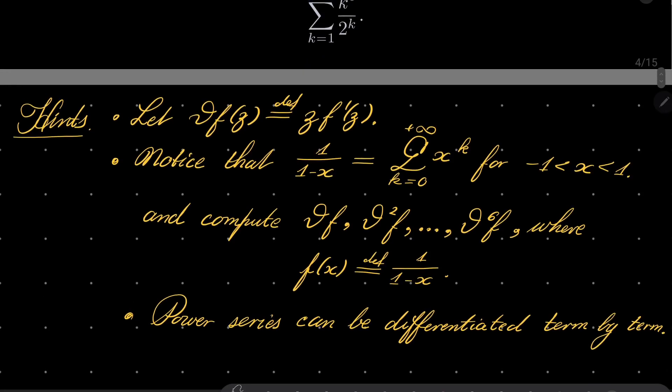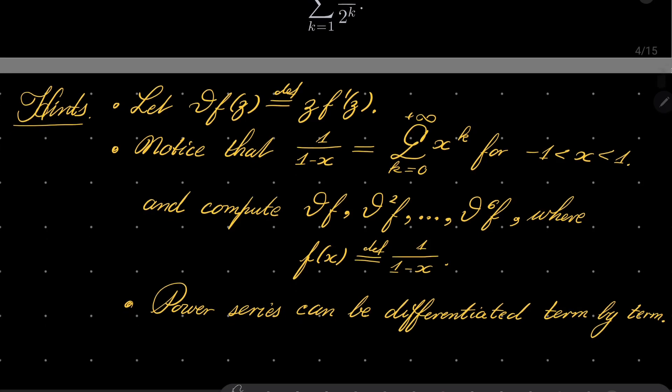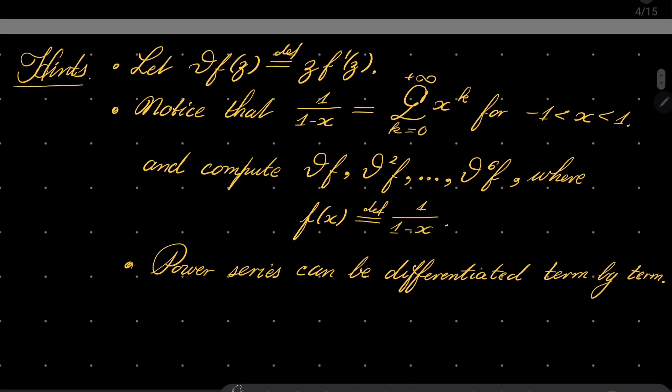Notice that we have this well-known formula that 1 over 1 minus x can be expressed as geometric series for x between minus 1 and 1, and you should take a look at theta operators. At first theta operator, then apply this operator once again, six times in total for our function 1 over 1 minus x.